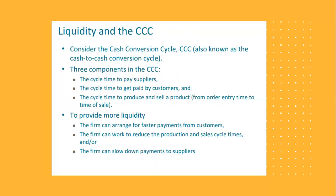Second, the firm can work to reduce the production and sales cycle. The faster things are made, the less wastage in the production cycle, the more lean it is, the more liquidity you will have. If it's taking a year to make something, all your investment is stuck for one entire year. Third, slow down payments you have to make to suppliers. Maybe you can negotiate with suppliers — nowadays globally, suppliers are willing to give very good timeframes for payments. Maybe you can request longer time to make payments. These are all good ways to improve the cash conversion cycle.